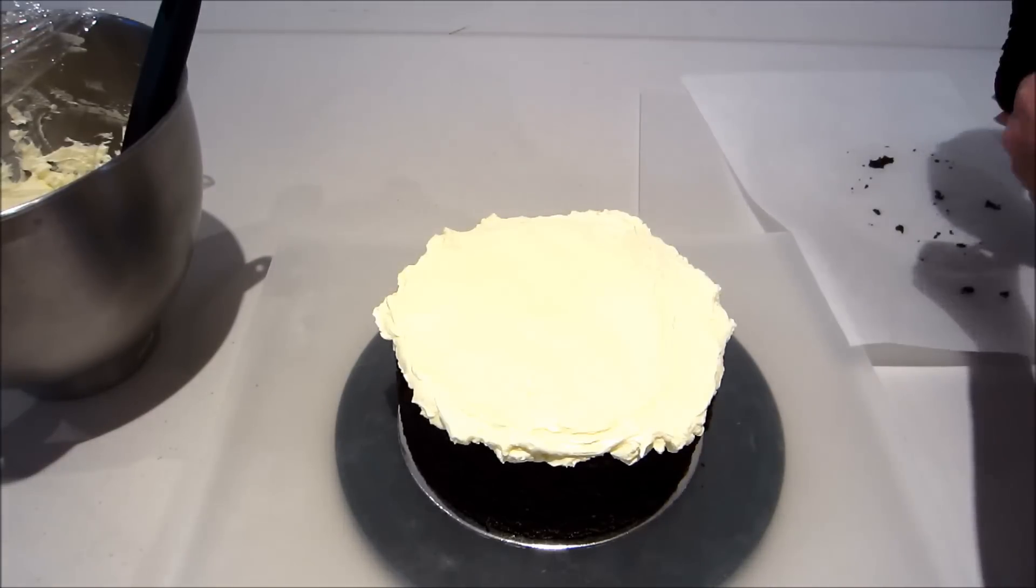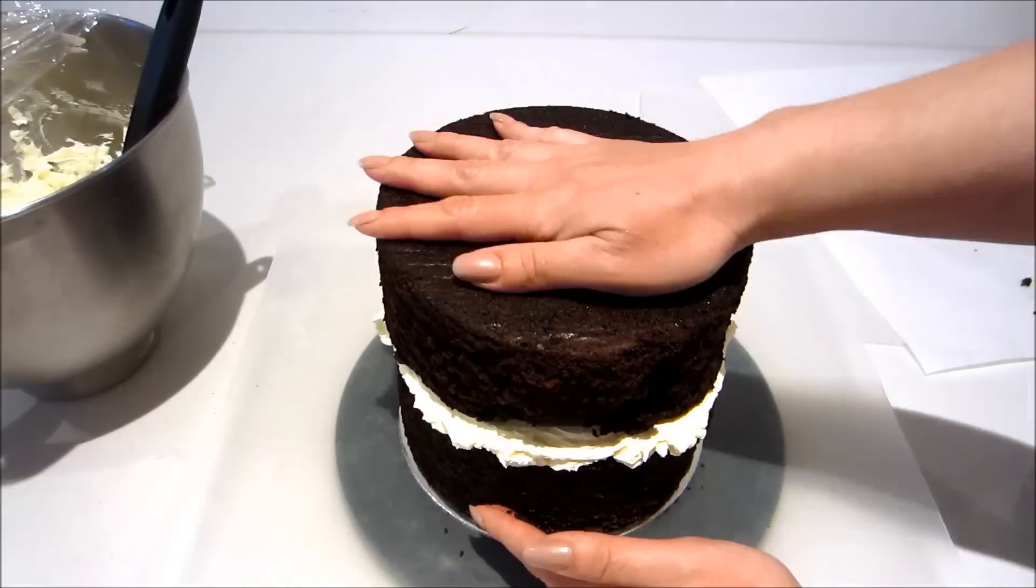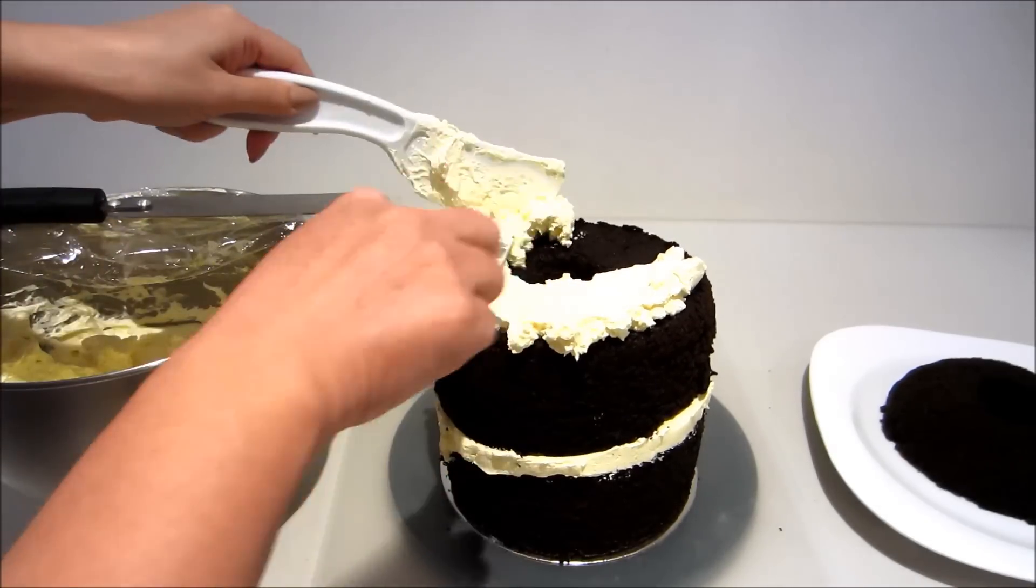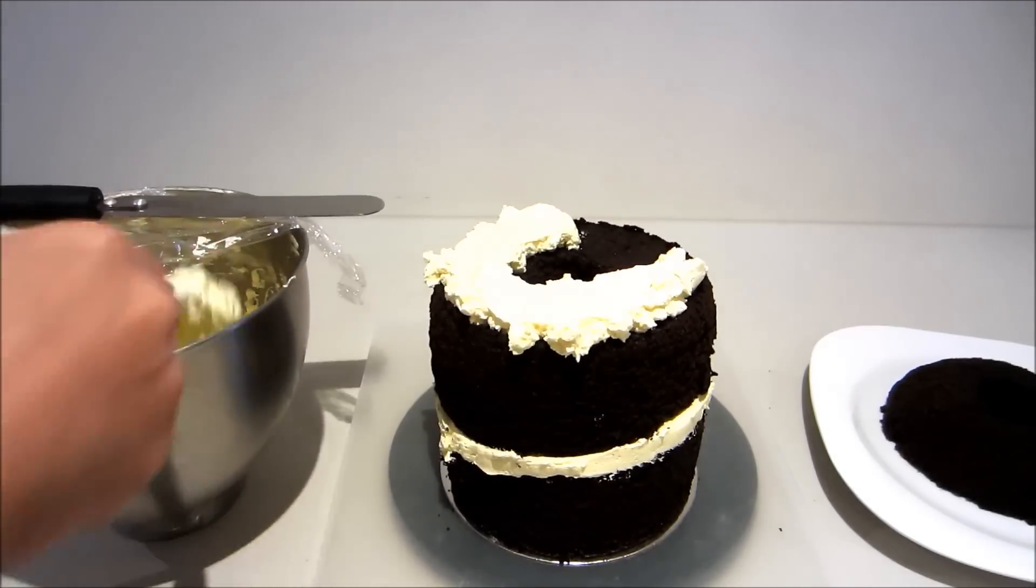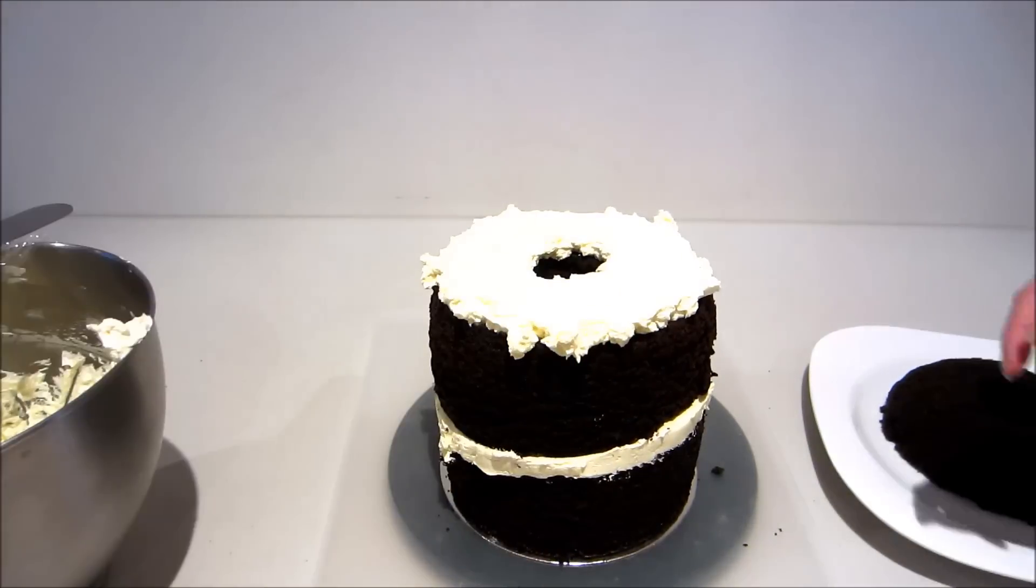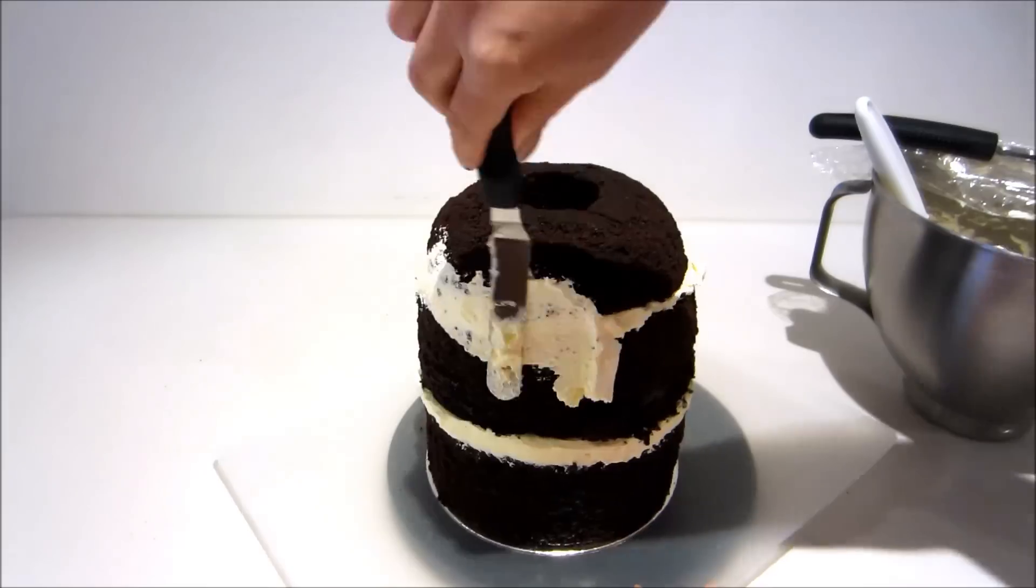Now I'm placing one of the cakes on top and icing the top. I'm going to place the third cake on top. I've already carved the third cake to look like the dome of the skirt. You can also bake the cake in a bowl to get the shape or if you want to see how I carve it you can check out my Elsa cake.